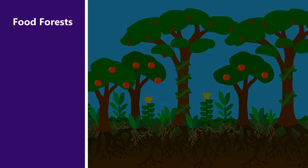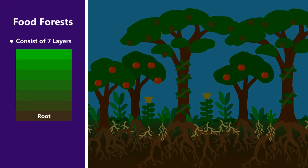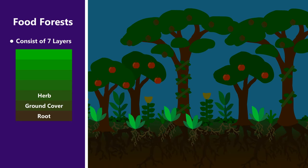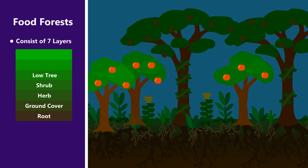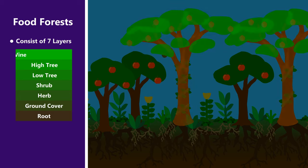Food forests are often thought of as comprising seven layers. The root layer, the ground cover layer, the herb layer, the shrub layer, the low tree layer, the high tree layer, and the vine layer.